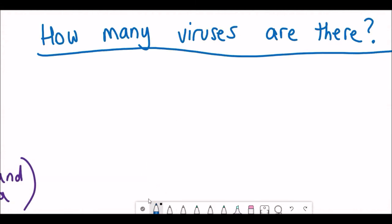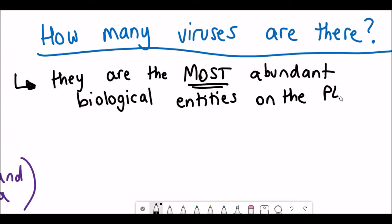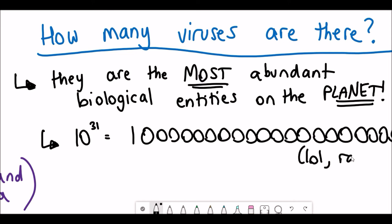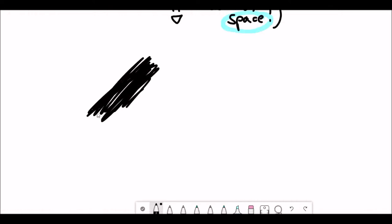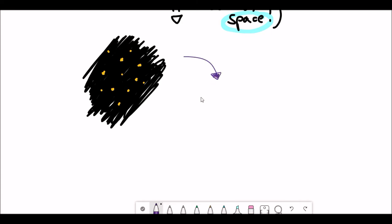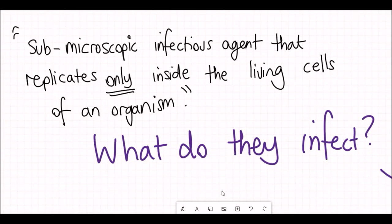So how many viruses actually are there? Well, viruses are the most abundant biological entities on the planet. One value I could find was 10 to the power of 31 — more than I had space to write out. That is an absolutely huge number, and to put it into some kind of perspective, that means there are 10 million times more viruses than there are stars in the universe.